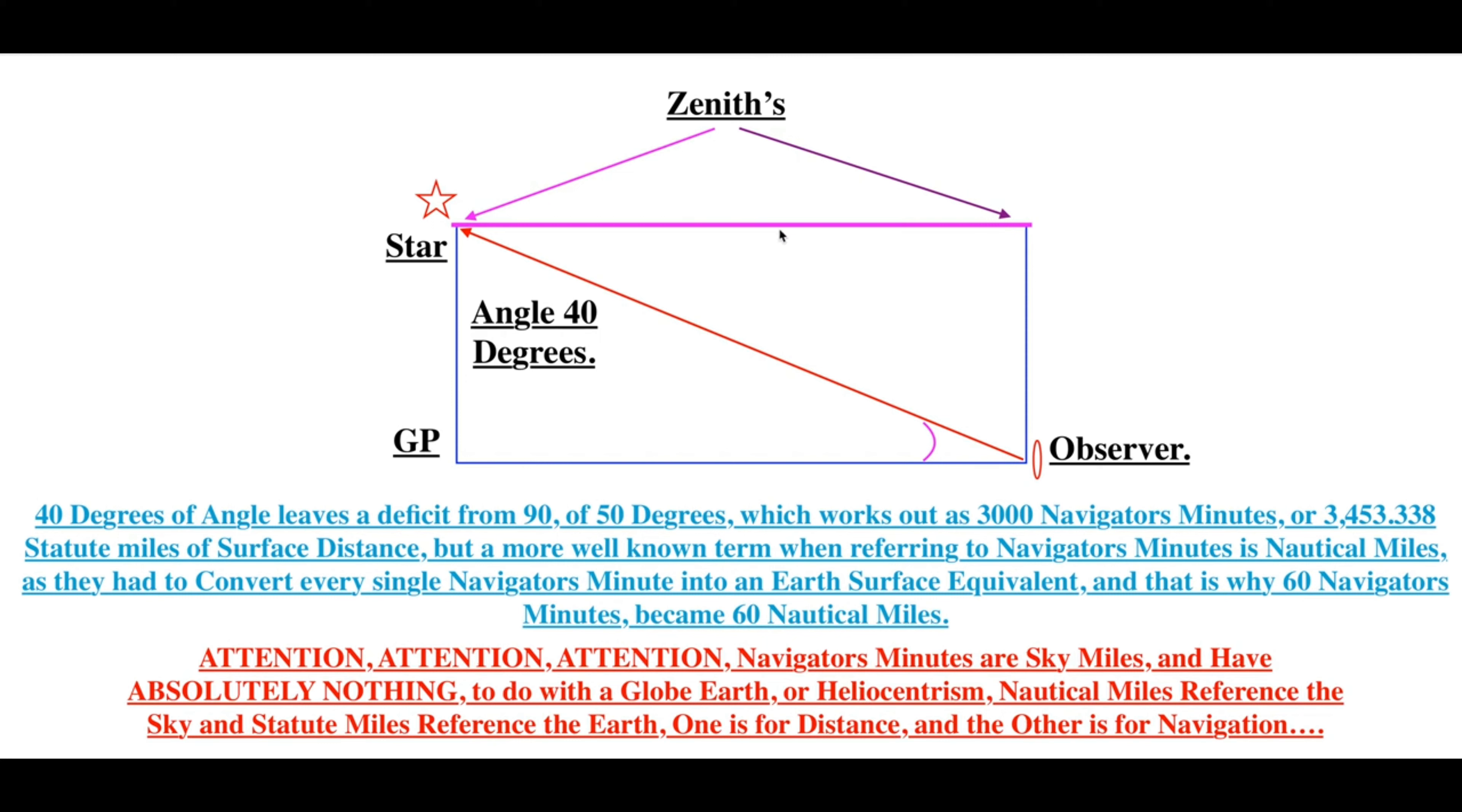So this is how it works. See this purple line here? This is the 3000 navigator's minutes, or 3,453 statute miles, in a straight line distance. But because it's in the sky, it's not a mile, it's not a statute miles.